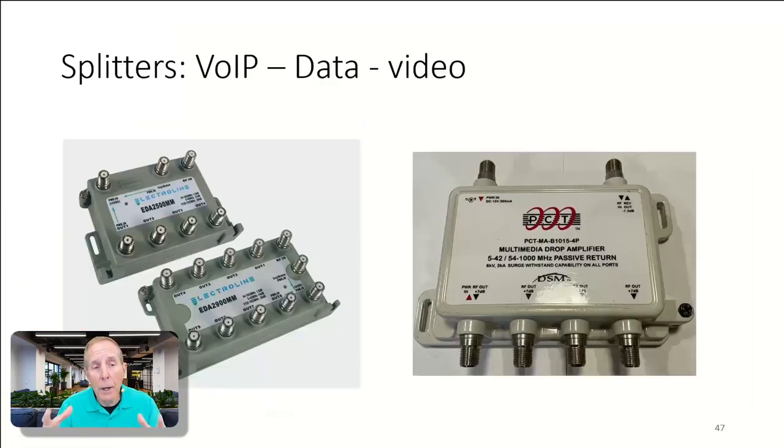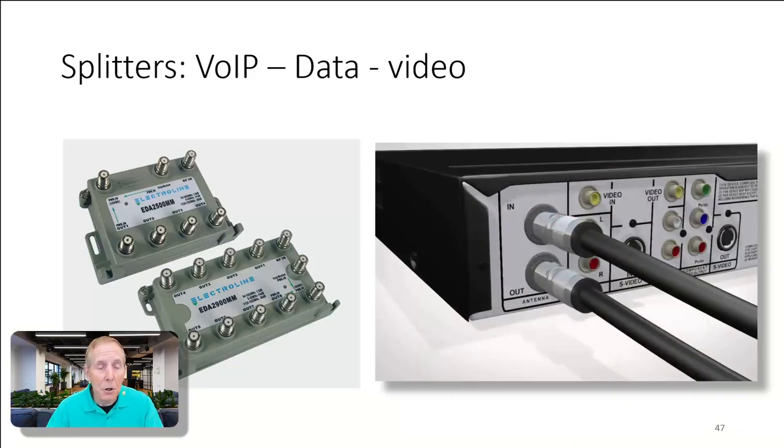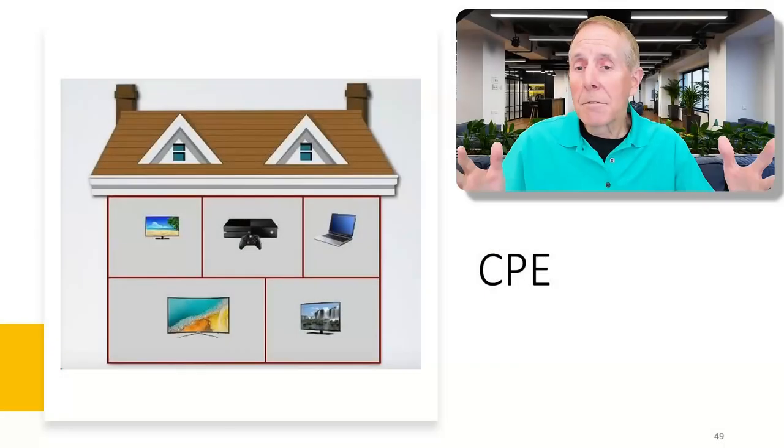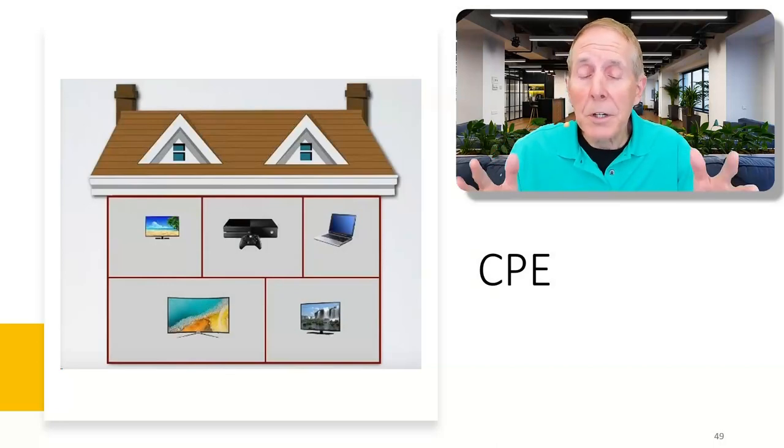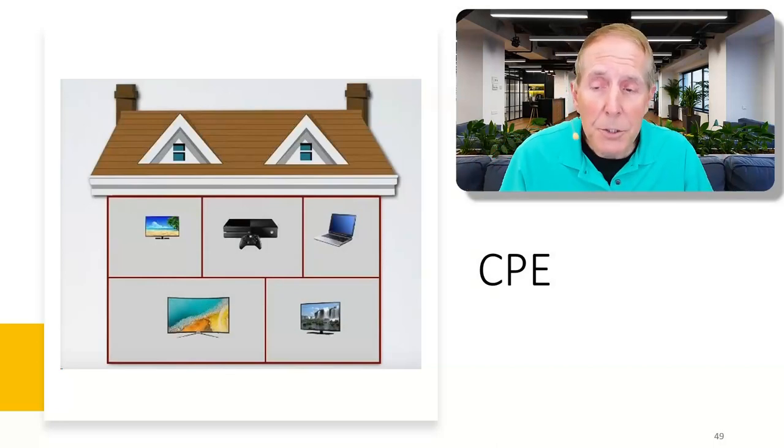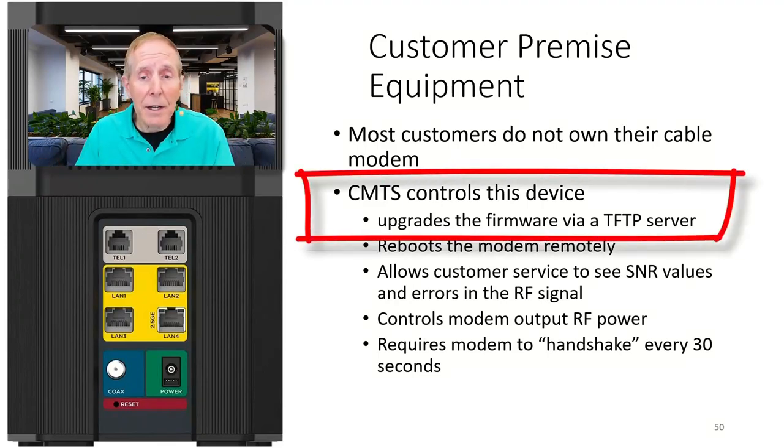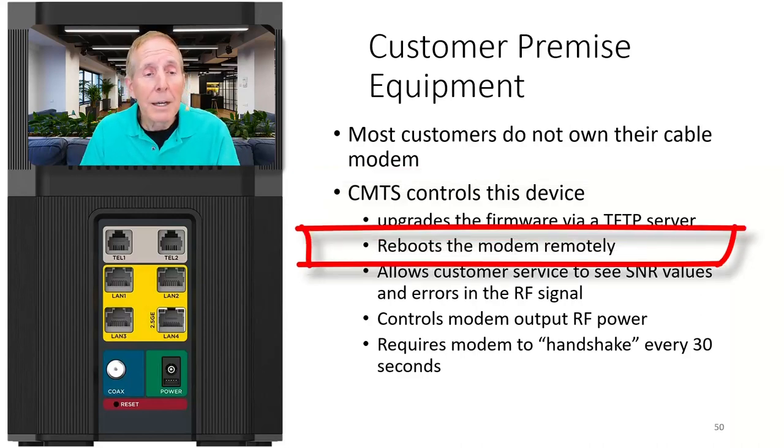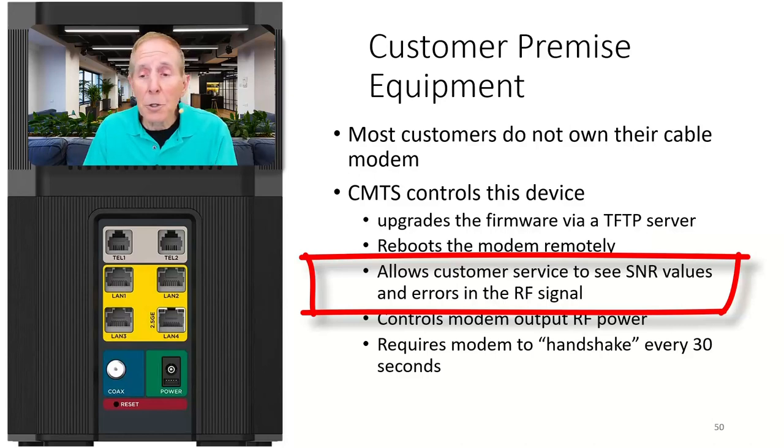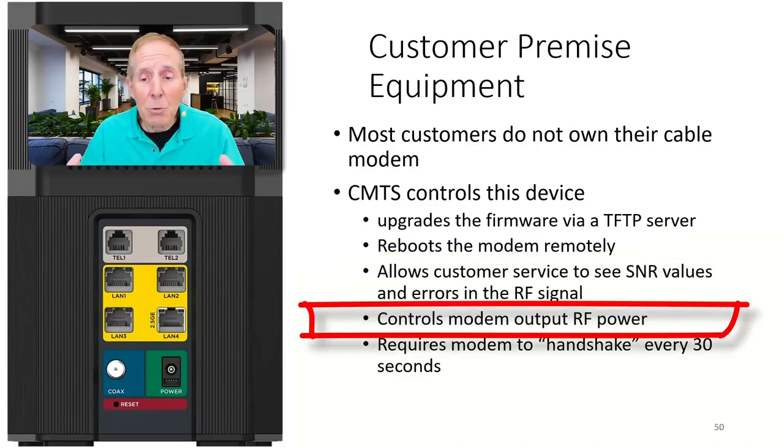As you get into your home, they will take the cable and split it. One feed will go to your cable modem. Other cable feeds will go to your set-top boxes. In delivering data to your home, there is also what is known as CPE, Customer Premise Equipment. Most customers do not own their cable modem, they lease it from the cable company. CMTS controls this device. It upgrades the firmware via TFTP server, reboots the cable modem remotely, allows customer service to see signal-to-noise values and errors in the RF signal, controls the modem output RF power, and requires the modem to handshake.